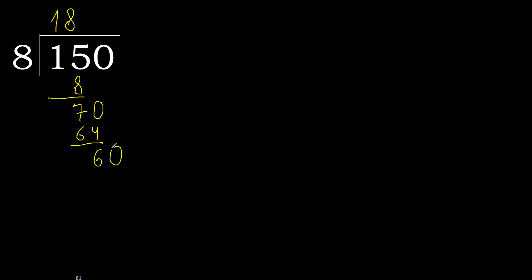There is no next number, therefore complete. Always complete with 0. Here, add a decimal point and complete. 60. 8 multiplied by 8 is greater, so 8 multiplied by 7 is 56.